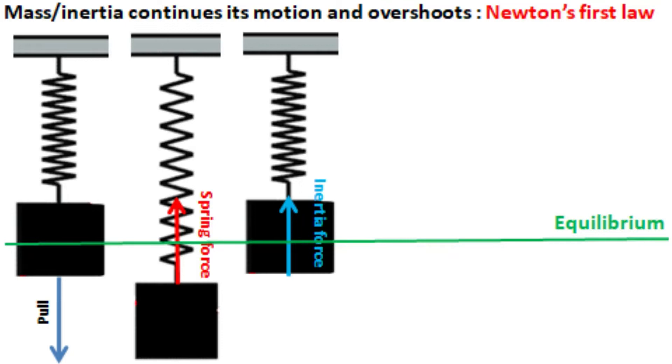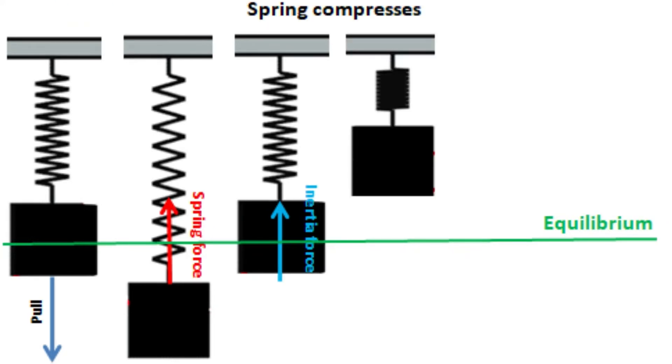Newton's first law explains why. According to the first law, an object in motion tends to stay in motion in the absence of external forces. The effect of inertia can be considered as inertia force, which can be quantified according to Newton's second law.